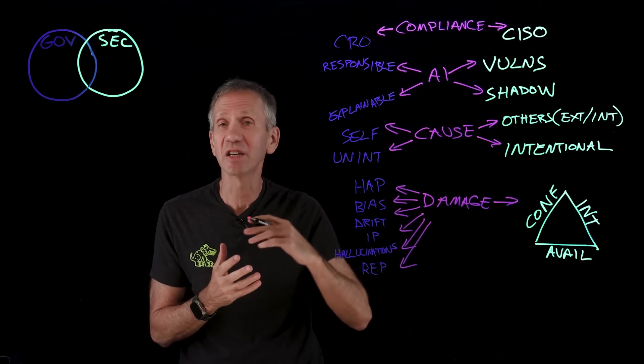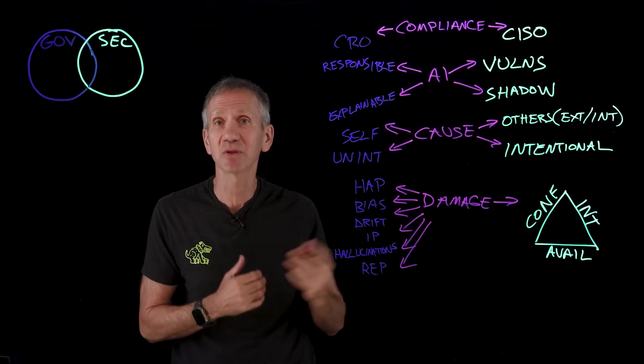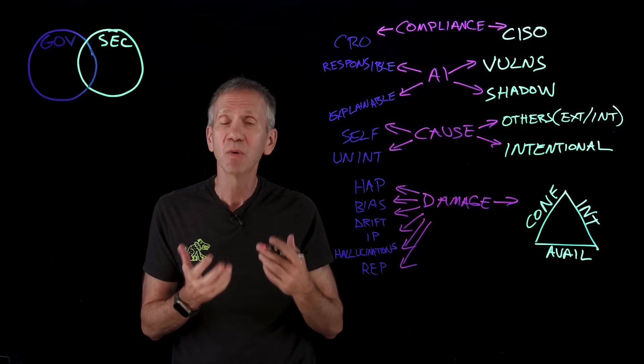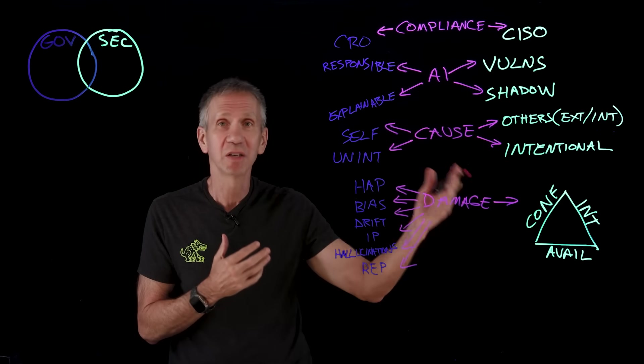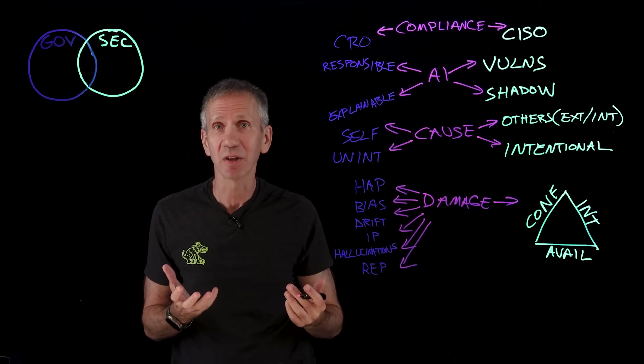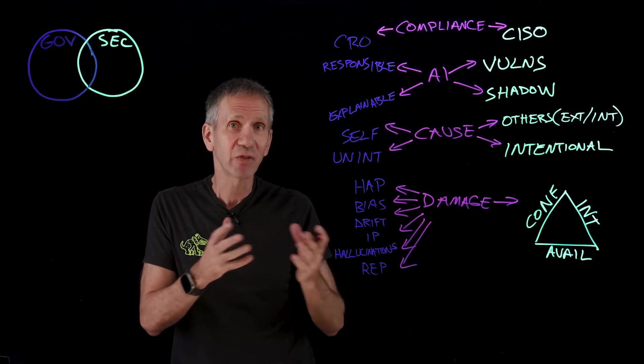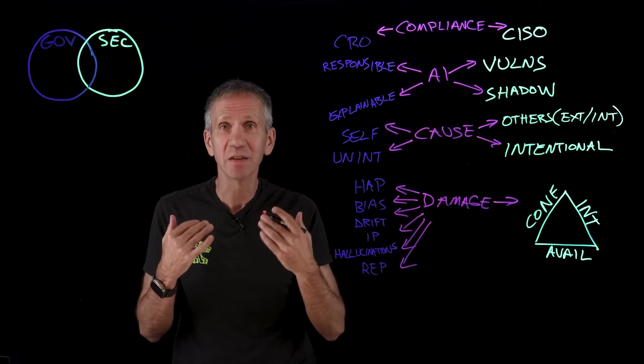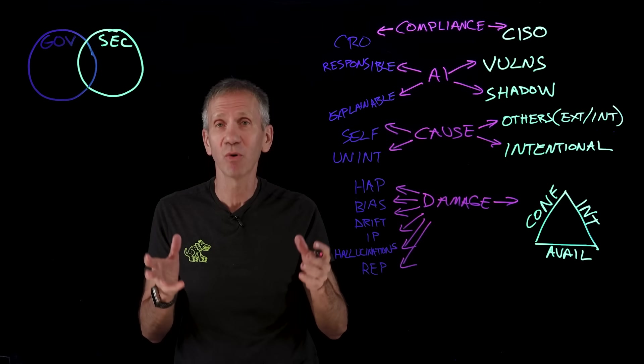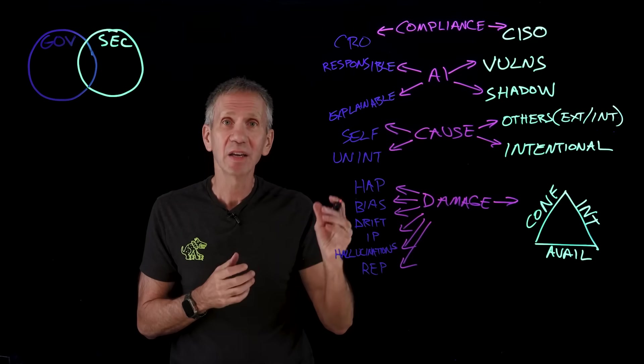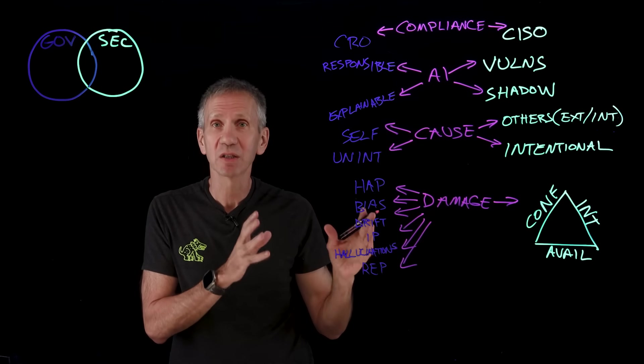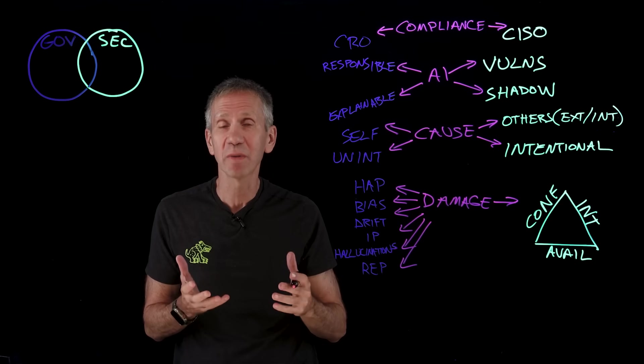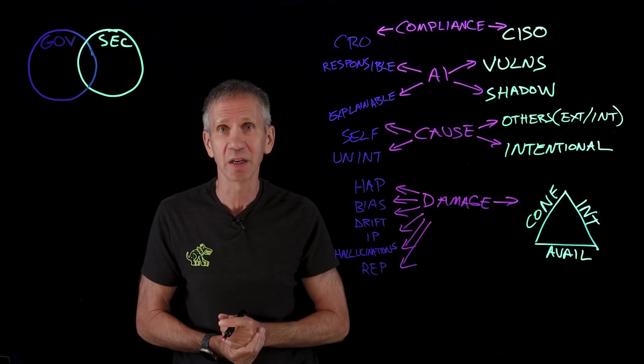We want to make sure that the system, from an integrity standpoint, cannot be manipulated. That someone can't figure out how to make the system do other things that we don't intend it to do, that it gives bad answers, the data has been poisoned. And then finally, we want to make sure that it's available, that someone can't do a denial of service attack against the system.